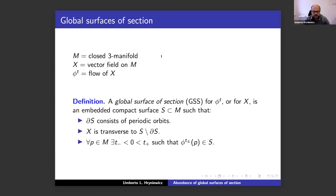Let me start by giving the definition. The notion of global surface of section does not have a universally accepted definition — everybody sometimes makes slightly different definitions. For me, I look at a closed three-manifold with a vector field, and the global surface of section is an embedded surface whose boundary consists of periodic orbits. The vector field is assumed to be transverse to the interior, and for every point on the manifold there are strictly positive and strictly negative times where the trajectory starting at that point hits the surface.